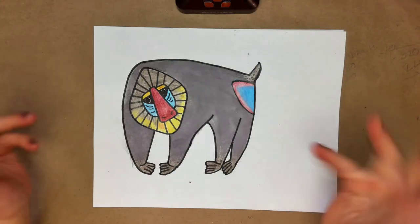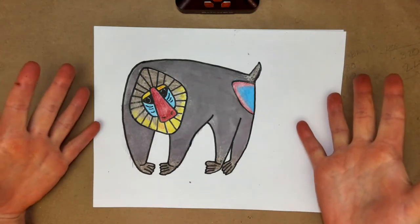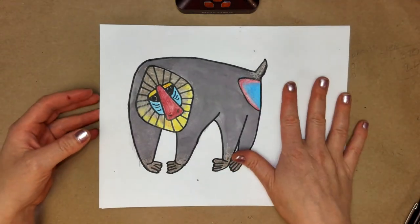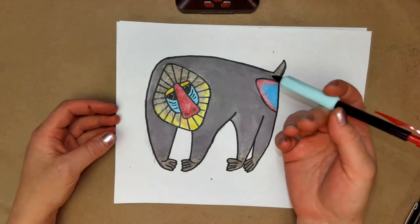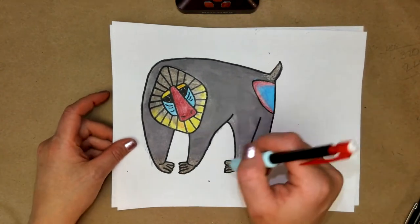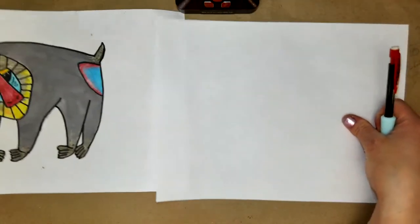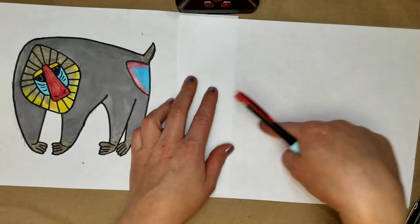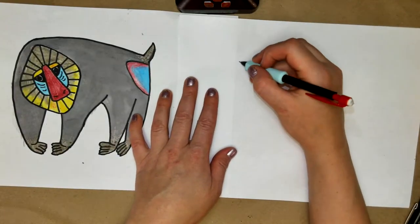So today we're going to be doing the very humorous member of the baboon family, a mandrill. You will need your pencil because there are going to be some lines that you might want to correct on this one.